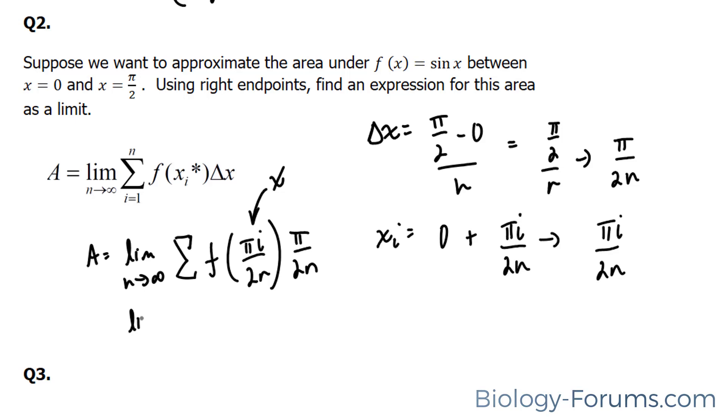We end up with the limit as n approaches infinity, the sum of sine, this thing, over 2n, times π over 2n. I'm just going to apply the rest, n i is equal to 1.